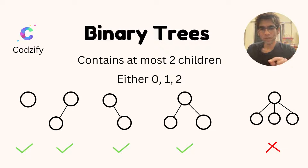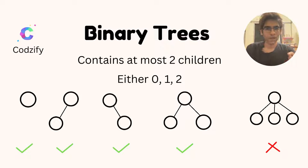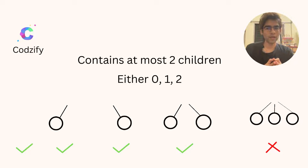In the first example, we have 0 children — only the root node is present, so this is a binary tree. The second example contains 1 child on the left side, so this is also a binary tree. The third example contains 1 node on the right side, so this is also a binary tree. The fourth example contains 2 children, so this is also a binary tree.